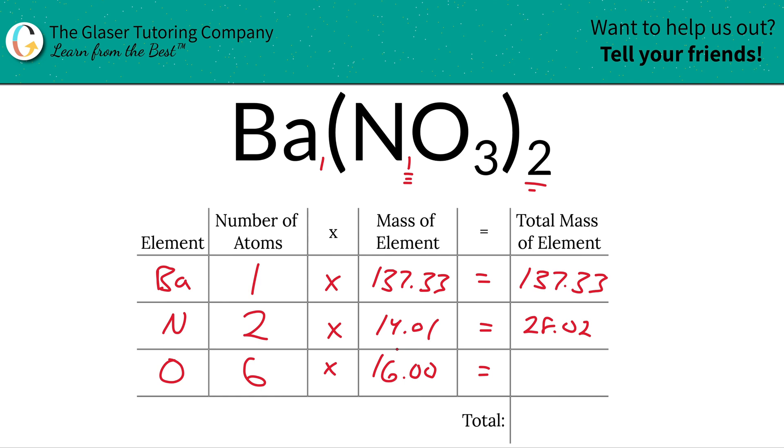And then same thing for oxygen. You've got each oxygen weighs 16. You've got six oxygen, so that's just going to be simply 96.